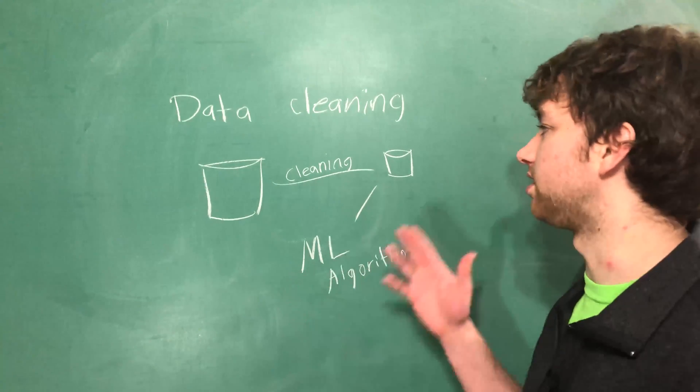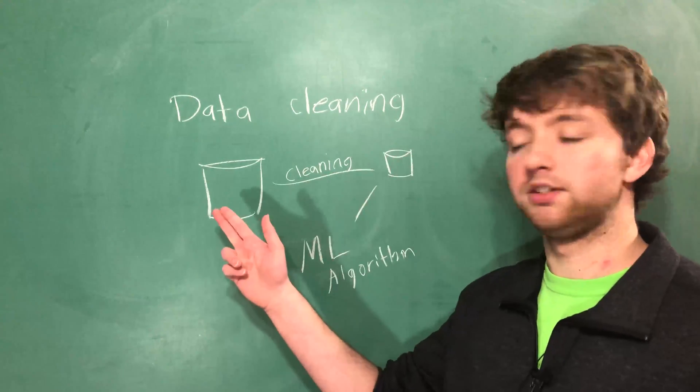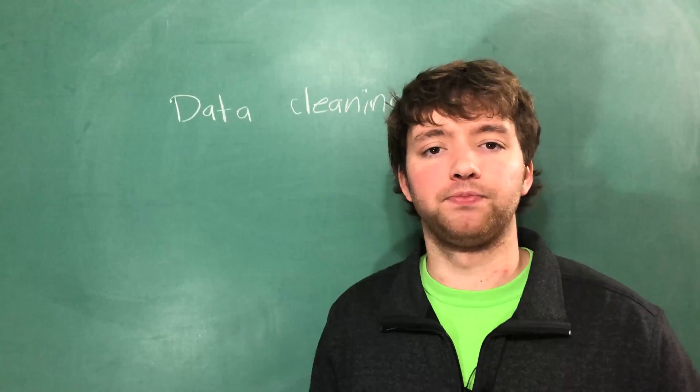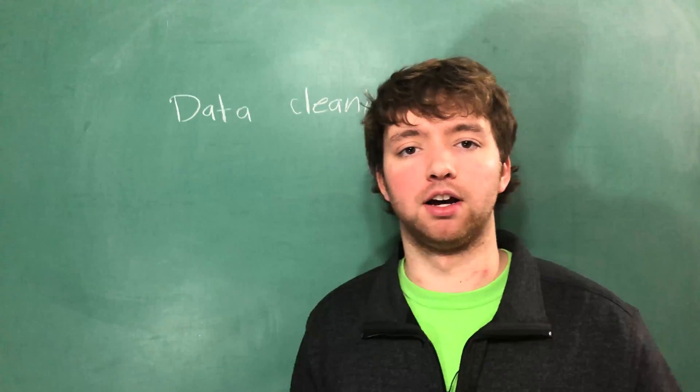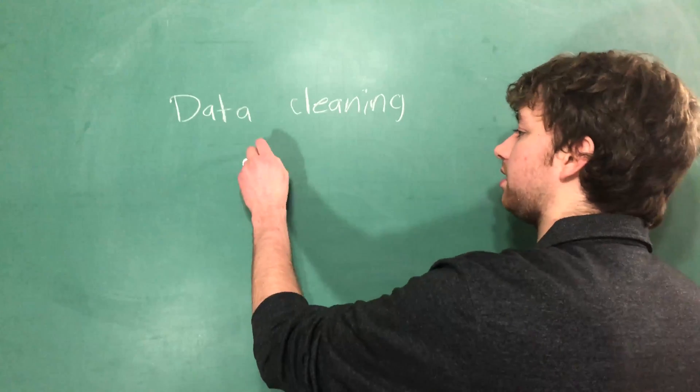So what are some of the things that we need to do to our data to go from here to here? Let's talk about it. The cleaning process goes through our data and gets rid of bad data. So what is bad data?